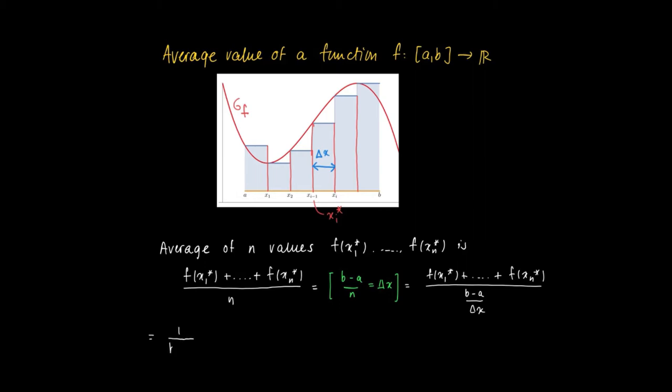This equals 1 over b minus a times the sum of the function values f(x_i star) times delta x. So this almost looks like a kind of Riemann sum: 1 over b minus a times the Riemann sum that we defined earlier, the sum over i equals 1 to n of f(x_i star) times delta x.